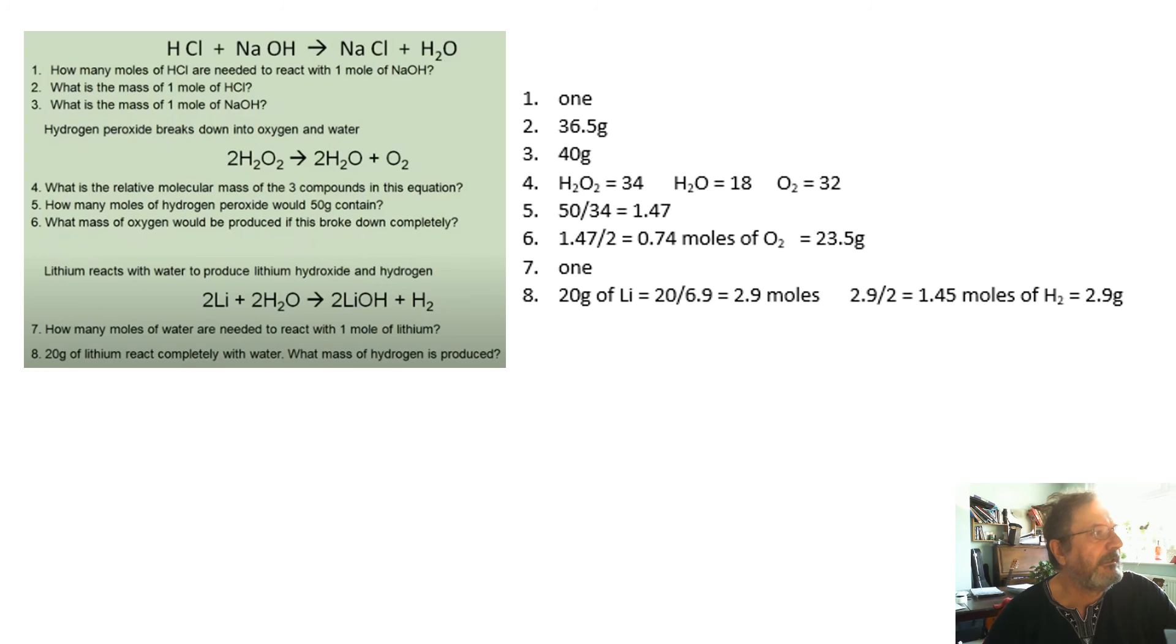20 grams of lithium react with water, so work out the number of moles of lithium. What mass of hydrogen is produced? Well, it'll be half as much because lithium to hydrogen is two to one, so it will be half as many moles. And then you can work out the mass of hydrogen produced.